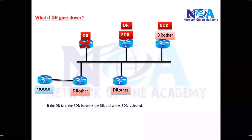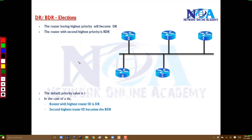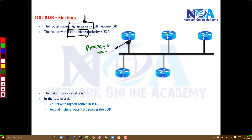The next question is: based on what conditions will the DR/BDR elections start? By default, they decide based on the priority value. Every interface has something called a priority value, and the default priority value is 1. Whichever device has the highest priority value will become the DR, and the router with the second highest priority value will become the BDR.